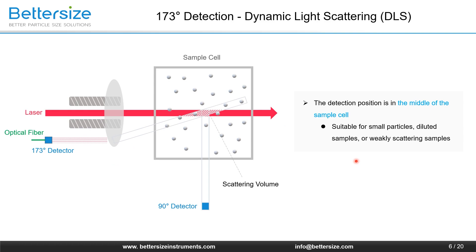Scattering volume is the intersection of the incident laser beam and the scattered light intercepted by the detector. When the detection position is in the middle of the sample cell, compared with the 90-degree design, the scattering volume is so large that the detector receives many scattering signals from the particles, increasing the sensitivity of the instrument. It has better detection ability for dilute samples with smaller sizes and weaker scattering effects. However, this detection is not suitable for samples with extremely high concentrations and very strong scattering effects, as the result will deviate from the true value.